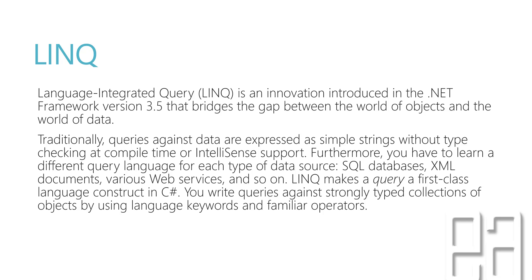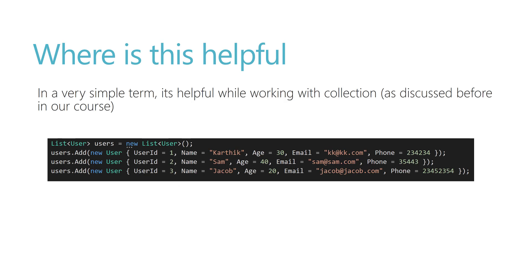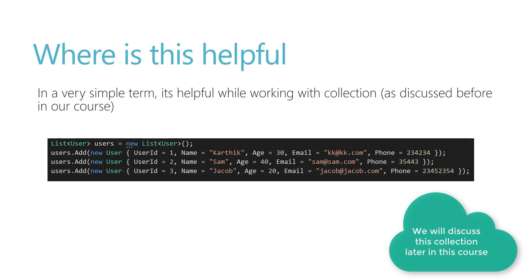We are not going to discuss how LINQ works behind the scenes with Entity Framework and MVC, but we will talk about how it works with collections of data, because we deal with collections in many automation testing cases. For example, we have a list of users where the user has different properties like user ID, name, age, email, and phone number. But what if the user also has other properties which are collections themselves, such as addresses with address name, street name, flat name, country, and zip code?